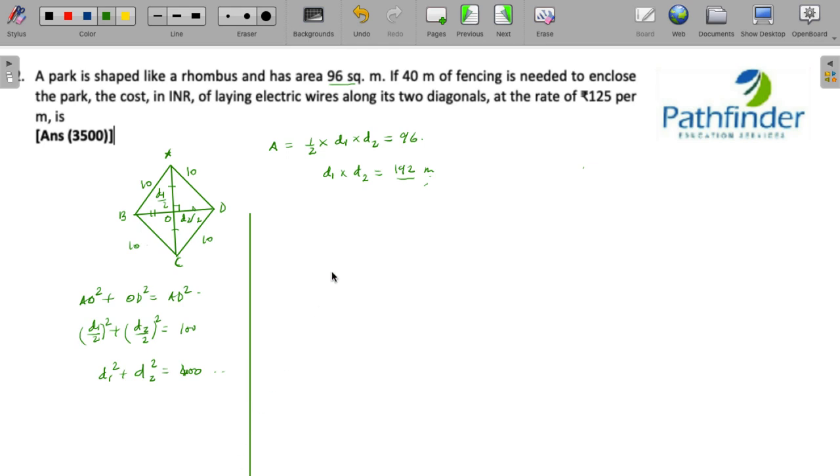We have got the value of d1 square plus d2 square, but we are required to calculate the sum of lengths of AC and BD. That is, d1 plus d2 is what we require, so we will use some basic identities.